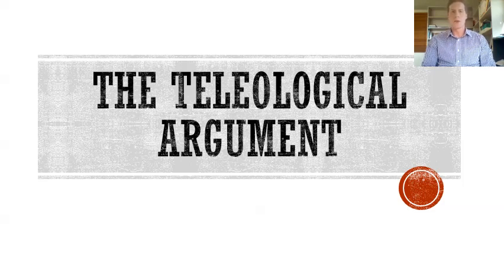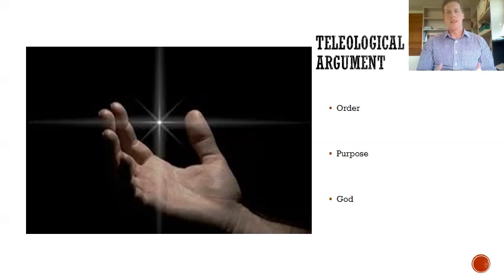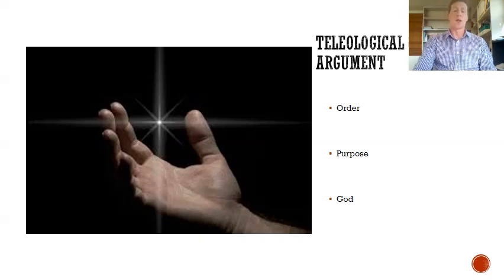Welcome to this tutorial on the teleological argument for the existence of the universe. The teleological argument states that we can see complex designs with purpose, order, regularity, and other sorts of evidence in the world that suggests an intelligent, infinitely great designer created it. And we call this designer God.